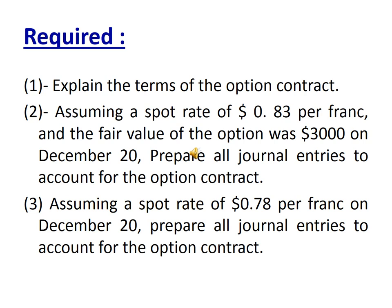Required: (1) Explain the terms of the option contract. (2) Assuming a spot rate of $0.83 per franc and a fair value of the option of $3,000 on December 20, prepare all journal entries to account for the option contract. (3) Assuming a spot rate of $0.78 per franc on December 20, prepare all journal entries to account for the option contract.